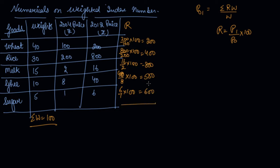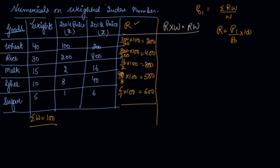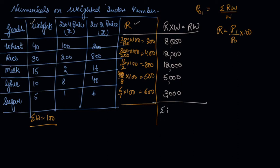Now the next thing we need is RW, that is the relative prices multiplied by the weights. So multiplying R into W we get: 8,000; 12,000; 12,000; 500 into 10 is 5,000; and 600 into 5 is 3,000. Adding these we get sigma RW equal to 40,000.